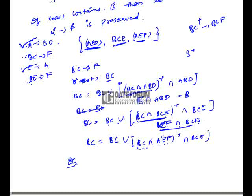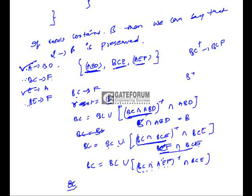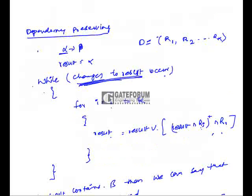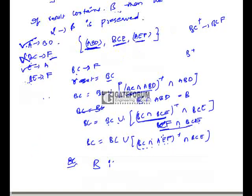We have run the for loop for all 3 tables. Now checking the while condition: the earlier result was BC and the new result is also BC — no changes occurred, so we exit the loop. The result does not contain the RHS F. So BC→F is not preserved. The decomposition is lossless but not dependency preserving. The correct answer is option B.